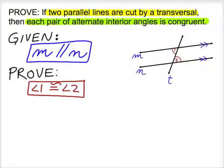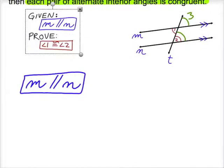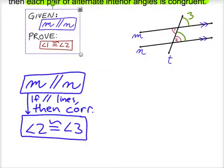First, let's deal with our given information: parallel lines. Remember, parallel lines will always deal with angles in some way. In the previous video, we saw that parallel lines make congruent corresponding angles. Let's call the green ones angle 3, and angle 2 was originally named. So now we have angles 2 and 3 are congruent. Because we know M and N are parallel, we can say that angles 2 and 3 are congruent because parallel lines make corresponding congruent angles.